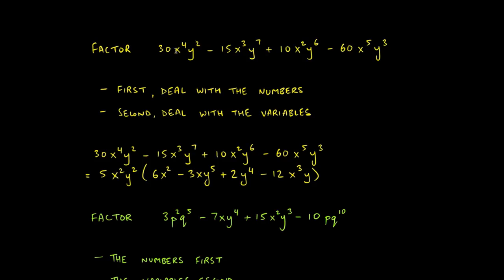Now let's handle the variables. Every term contains an x, so we can factor out x. Every term also contains a y. For x, the exponents are 4, 3, 2, and 5 — the lowest is 2, so we factor out x². For y, the exponents are 2, 7, 6, and 3 — the lowest is 2, so we factor out y².